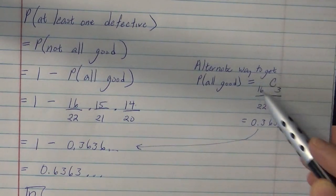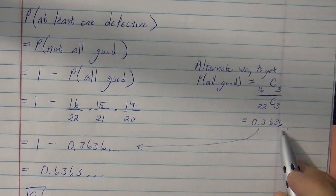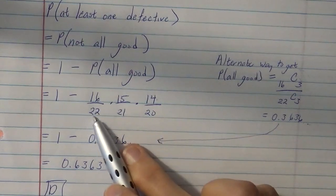So if you punch this in on your calculator, and punch this in on your calculator, and divide them, you will get 0.3636, same thing as you did when you did this.